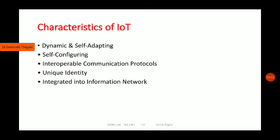Self-adapting means that whatever device or human being you are trying to connect to the Internet, that device should be able to adjust with existing protocols and the existing network in order to cope with the present network. IoT devices must have the capability to dynamically adapt with changing context and take actions based on their operations, conditions, user context, and whatever data is sent. As soon as a small change in the environment occurs, the device should be able to adjust on its own — that is what we call self-adapting.